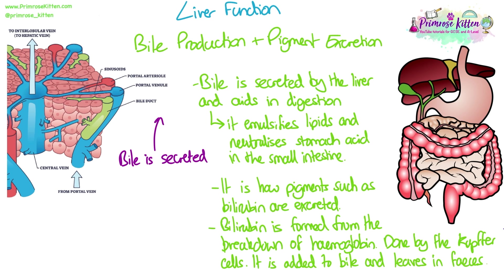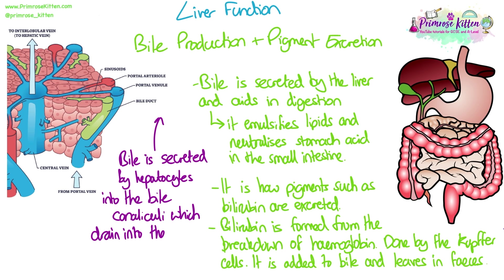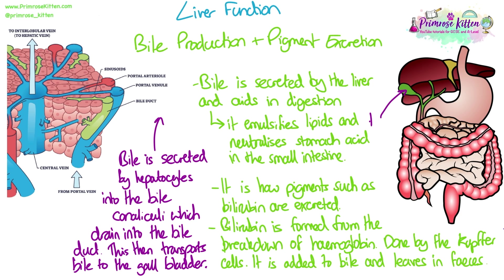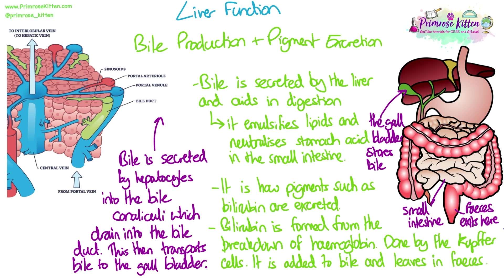Bile is secreted by the liver cells — the hepatocytes. It is released into the bile canaliculi, which are the canal-like structures, and they all drain into the bile duct. This then transports bile to the gallbladder where it is stored. The gallbladder then releases bile into the small intestine, where it mixes with enzymes to help with digestion and neutralise stomach acid. The bilirubin passes through the intestines, doesn't get absorbed, and is excreted bound up in faeces through the rectum.